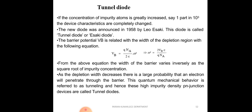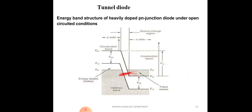The barrier potential Vb is related to the width of the depletion region by the equation: Vb = (q × Na) / (2ε) × ω², so ω² = (2 × Vb × ε) / (q × Na), where q is the charge, Na is the acceptor concentration, ε is the permittivity, and Vb is the applied bias voltage. From this equation, the width of the barrier varies inversely as the square root of the impurity concentration. As the depletion width decreases, there is a large probability that electrons will penetrate through the barrier — this quantum mechanical behavior is referred to as tunneling, and hence these high impurity density PN junction devices are called tunnel diodes.